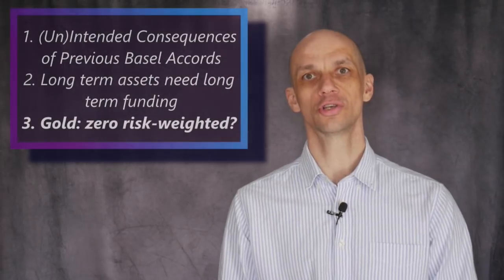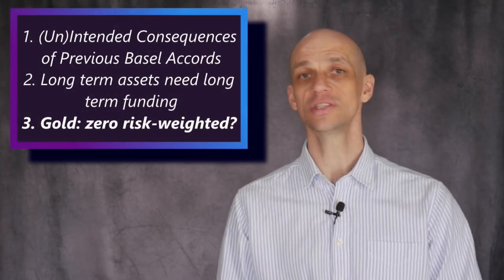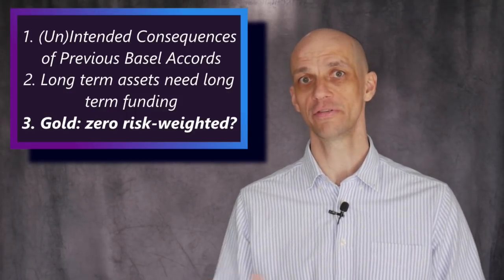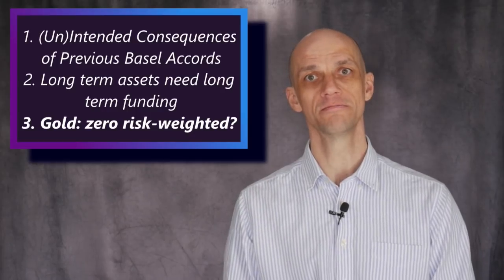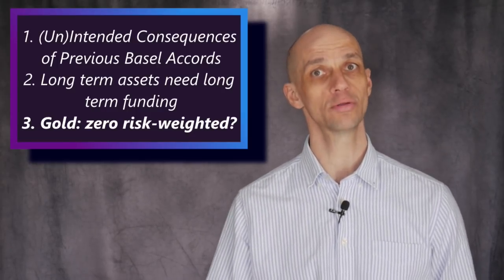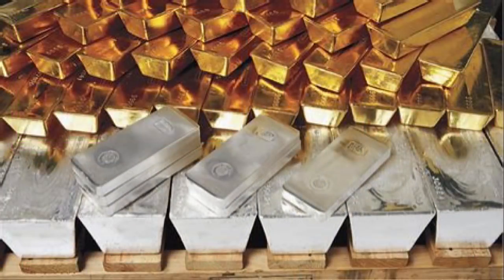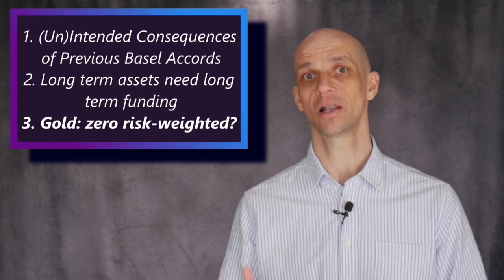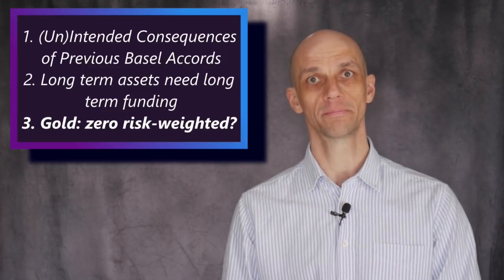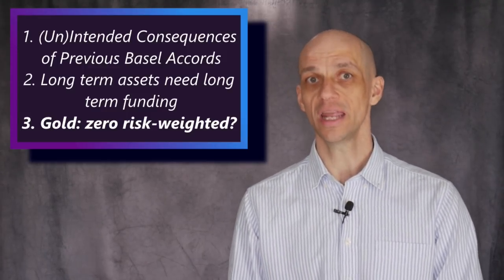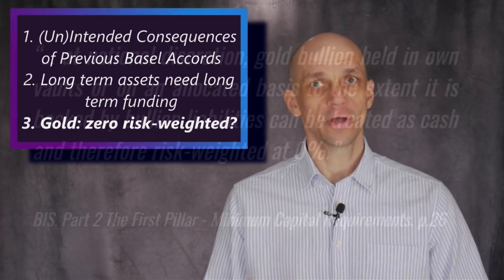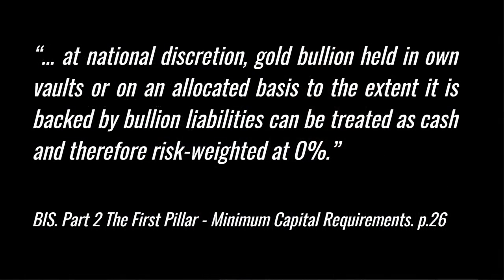So what weighting should gold be given, due to its available liquidity and its lack of counterparty risk? It has some price volatility — so 15, 20, 30%? No. The BIS, never keen to promote the role of gold, has given it an 85% stable funding ratio, meaning financing gold as a bank asset must be done with 85% longer-term, more expensive funding. To be clear, this is an increase in the risk weighting of gold — the original risk-free asset.